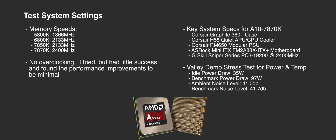So the first thing to do is look at the test system settings. A key component of any APU system is the main system memory speed, which is what the APU uses for its graphics buffer. There's a pretty decent bump in the GPU clock speed between the 7850 and the 7870, but a lot of the big performance gains come with the 2400 megahertz RAM.